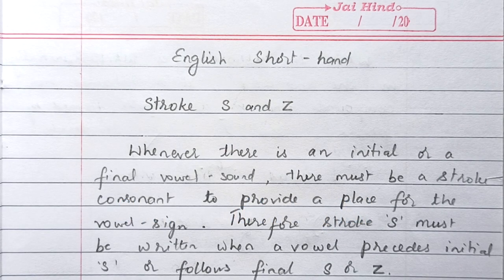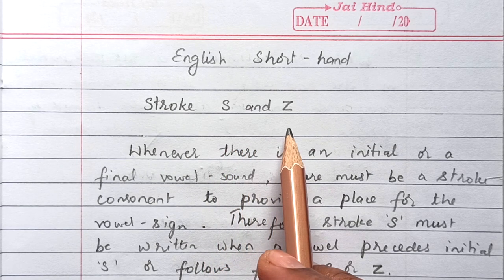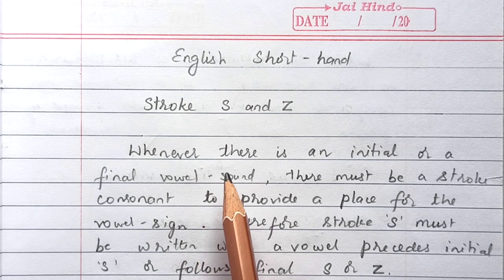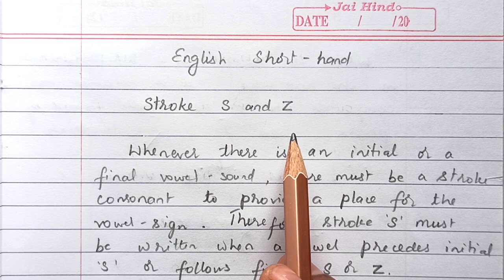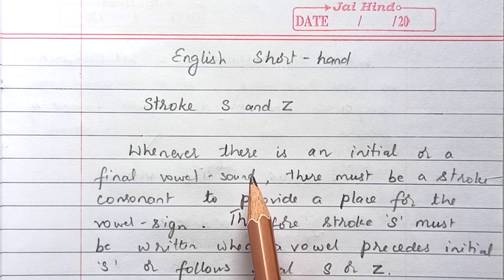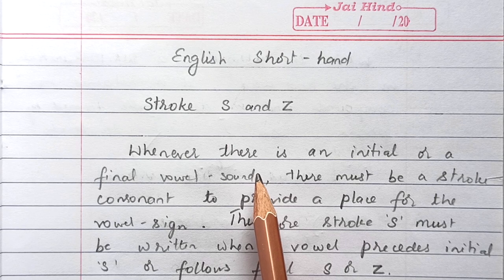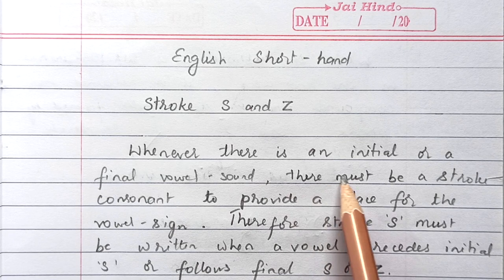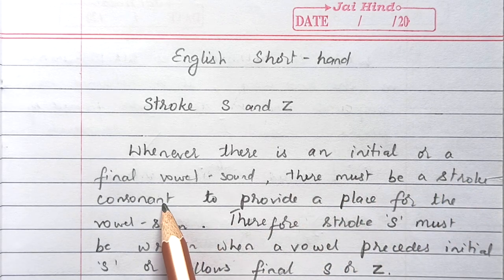Welcome to our English short and easy learning class. Today's lesson is stroke S and Z. We studied this stroke S and Z with a consonant and also using a small circle, and we'll see in detail where this stroke S and Z has to be used — whenever there is an initial or a final vowel sound.